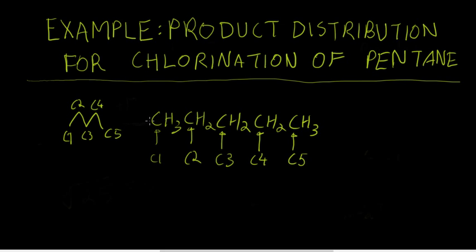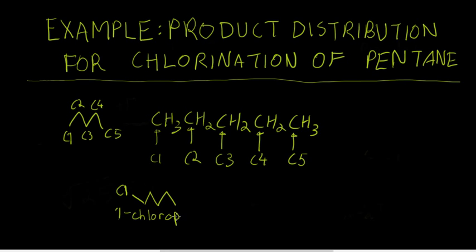We can have chlorination at C1, and we would get 1-chloropentane. That would be the same as having chlorination at C5. So this is one of our products: 1-chloropentane.